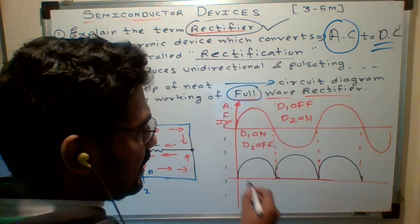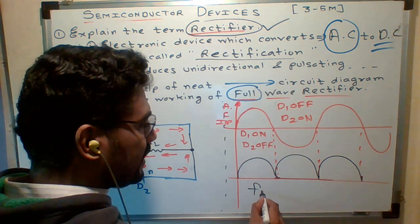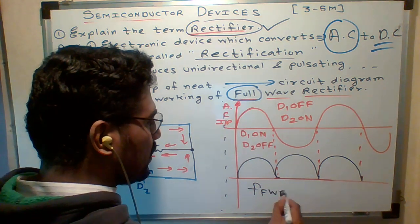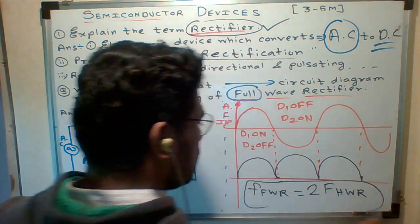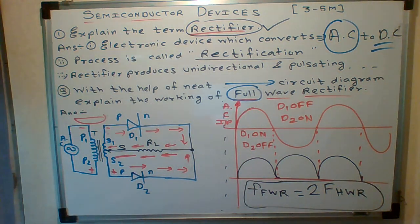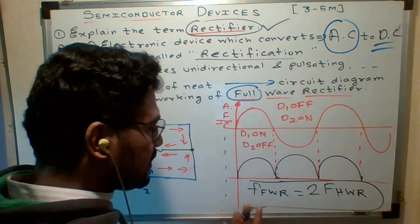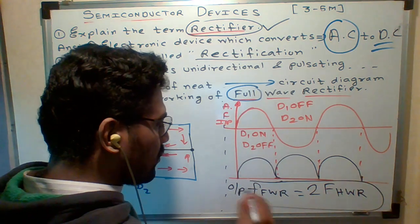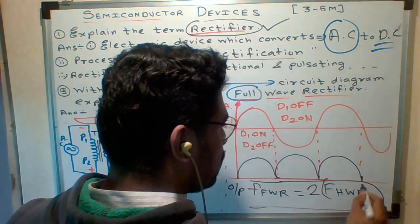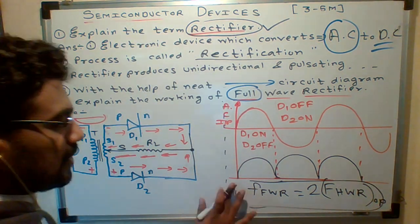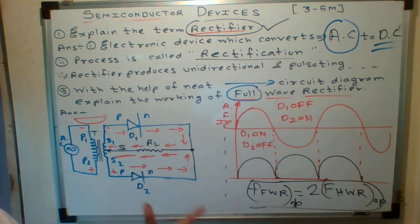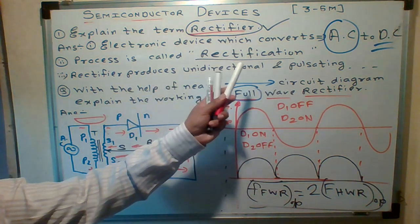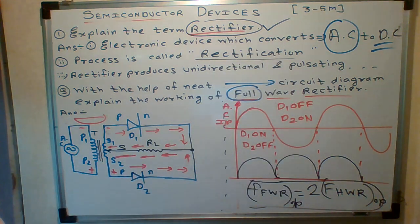Here you observe that the output frequency of the full-wave rectifier (FWR) is always two times the output frequency of the half-wave rectifier. Remember this formula. This is the simple construction and working of a full-wave rectifier. The rectification process is the process in which AC is converted to DC.